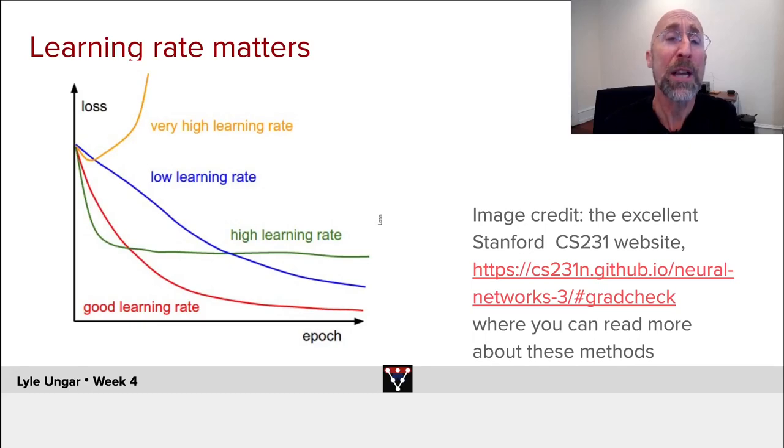A good learning rate takes you down smoothly, converging to at least a good local optimum. We'll worry next week about what optimum you converge to, but this week we'll worry about how fast you converge to them.